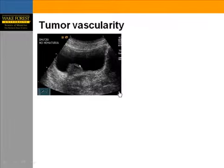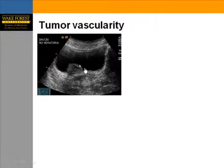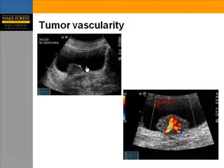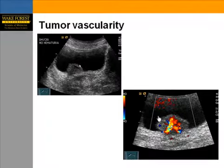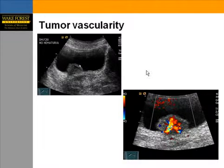Another patient who presented for renal ultrasound — during the examination, we incidentally identified a soft tissue mass in the bladder. We applied color Doppler and it was avidly vascular. The patient did not have hematuria; nonetheless, she was taken for cystoscopy and biopsy-proven transitional carcinoma that was asymptomatic.